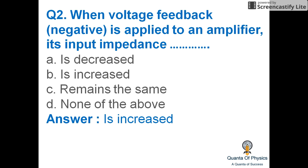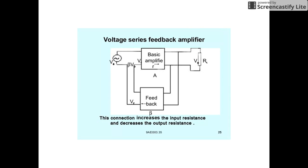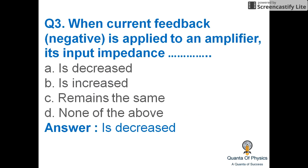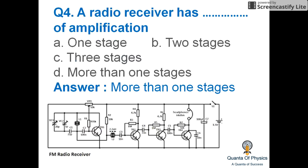When voltage feedback is applied to an amplifier, its input impedance is increased — this is the voltage feedback amplifier. When negative current feedback is applied to an amplifier, its input impedance is decreased.